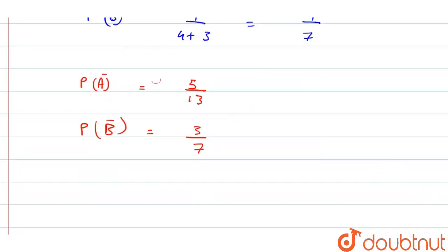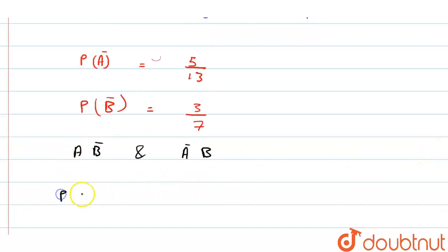For that we have A ∩ B' and A' ∩ B. So if A will live, B will not, and if B will live then A will not. And we know both are independent events.